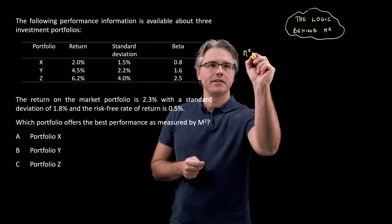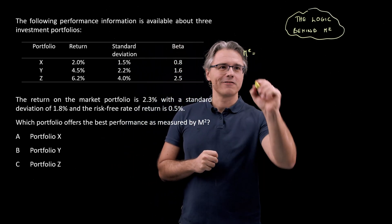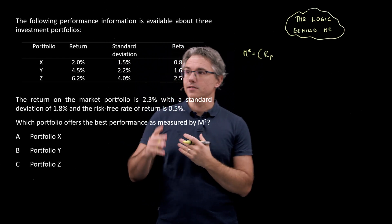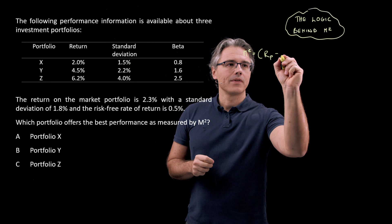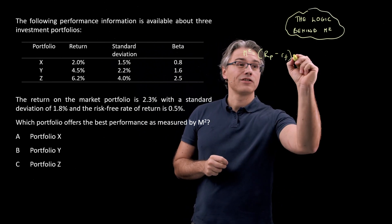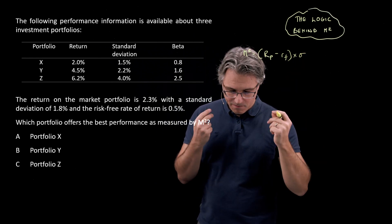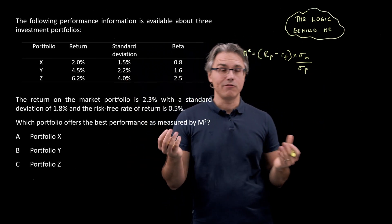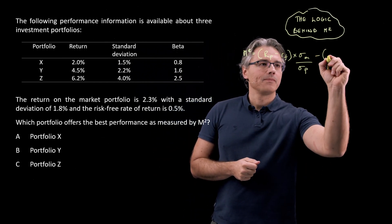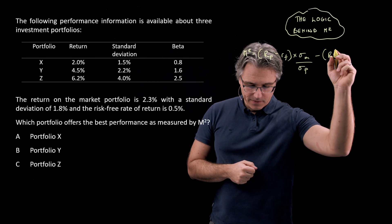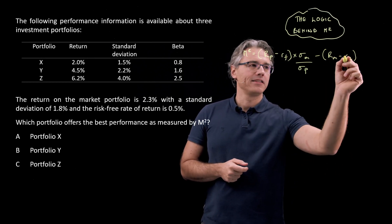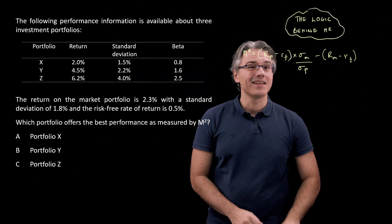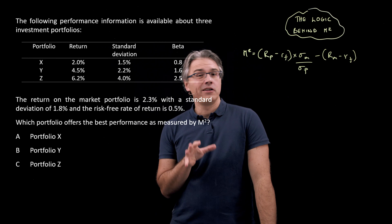I'm going to write out the formula for it. So M-squared equals, and this is very easy to get wrong, so I'm going to say, open bracket, the return on the specific portfolio that we are analyzing, so it's going to be X, Y, Z in just a moment, minus the risk-free rate of return, times the standard deviation of the market portfolio divided by the standard deviation of the portfolio that we are analyzing, so that would be P in this case, minus the return on the market portfolio minus the risk-free rate. So a lot of stuff here to get wrong. To be honest, the way I like to work with this one is not necessarily to remember the formula as such, but think about the underlying logic for it.